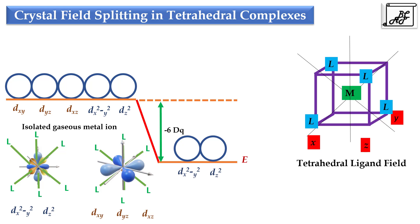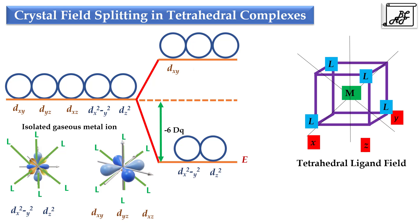The t2 set of orbitals, which are directly facing the ligands, will face more repulsion, and hence to maintain the barycentre, their energy will increase by +4dq. Remember, in case of tetrahedral ligand field, we use the terms t2 and e.